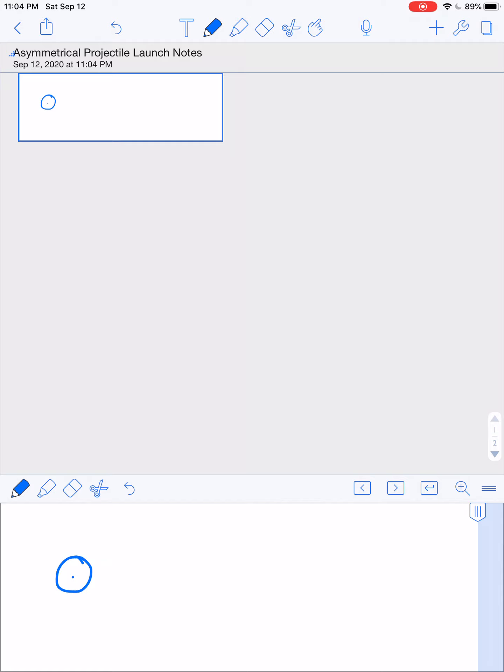So the first thing is that we have this ball that is being launched asymmetrically. What exactly does that mean? Basically what that means is that we don't start and end at the same height. So that would look like something, I'm going to make sure that that's in the frame, something like this.